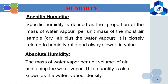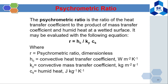Humidity is divided into specific humidity and absolute humidity. Specific humidity is defined as the proportion of the mass of water vapor per unit mass of the moist air sample — dry air plus water vapor — and is closely related to the humidity ratio, always lower in value. Absolute humidity is the mass of water vapor per unit volume of air containing the water vapor, also known as water vapor density. The psychrometric ratio is the ratio of the heat transfer coefficient to the product of the mass transfer coefficient and humidity at the wetted surface, evaluated by a specific equation.